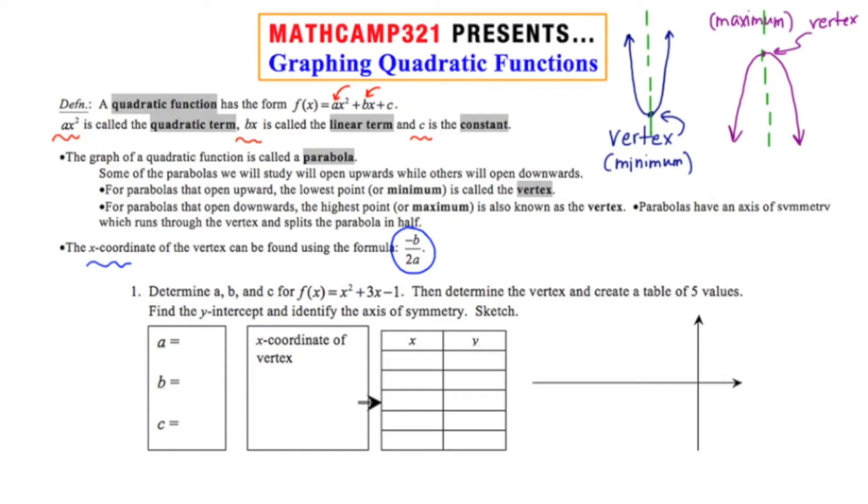Number one, determine a, b, and c for the quadratic function given, then determine the vertex, and create a table of five values. Find the y intercept and identify the axis of symmetry sketch. So in this question, they want us to do a lot of different things.